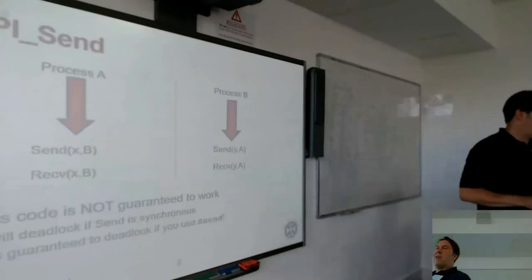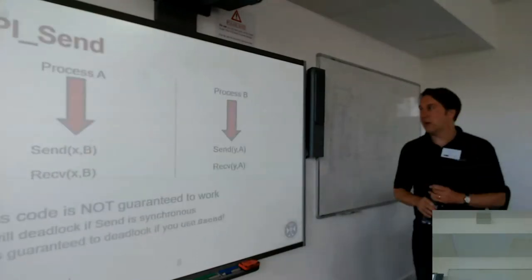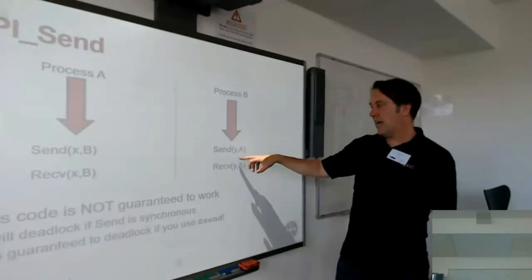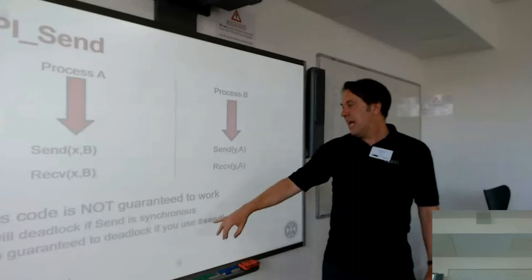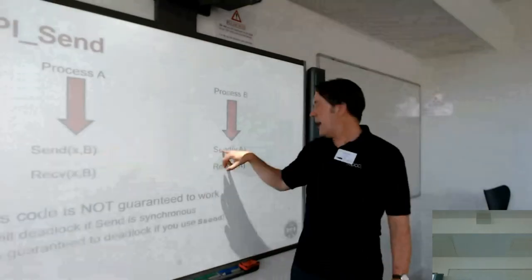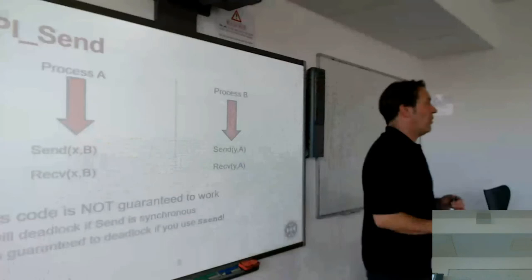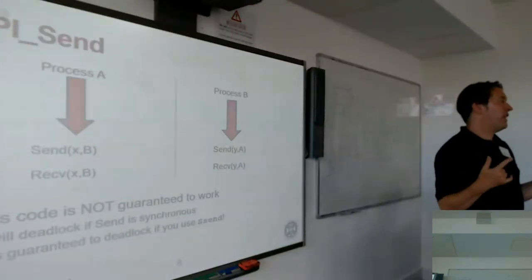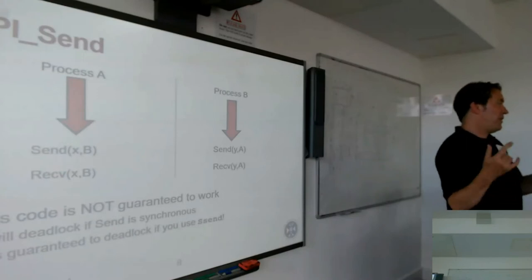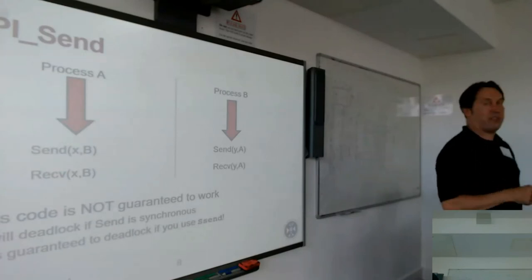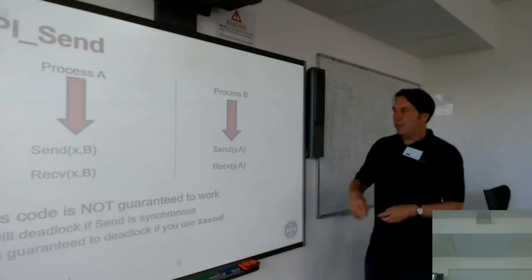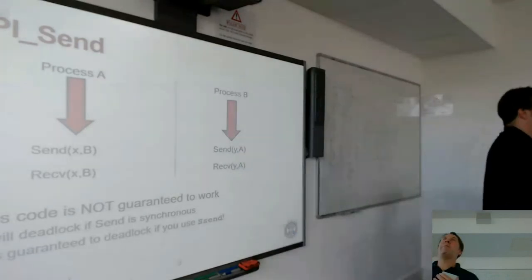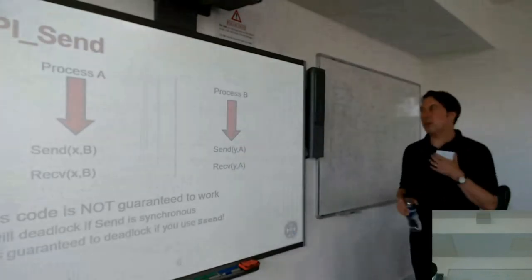You see a lot of this in MPI programs: Process A does a send of X to B, and Process B does a send of Y to A. If these were Ssends, this would be guaranteed to deadlock — they're both trying to phone each other at the same time, both saying: I will not progress until a receive has been issued. This code is not guaranteed to work. However, it will probably work, because the small messages it's sending will probably be implemented asynchronously and buffered. But this is a very dangerous situation.